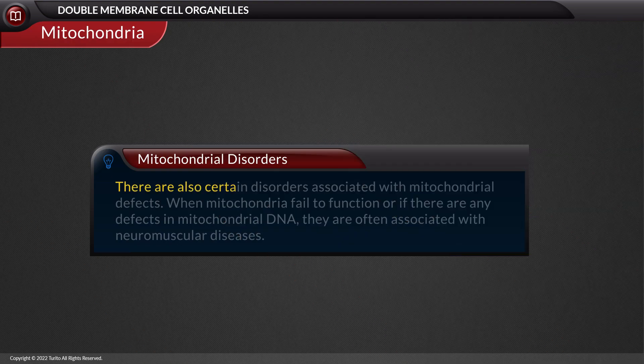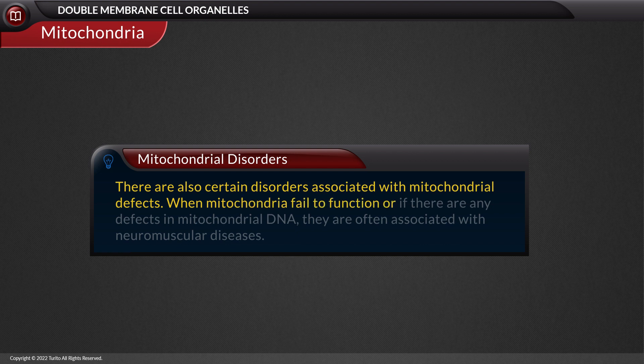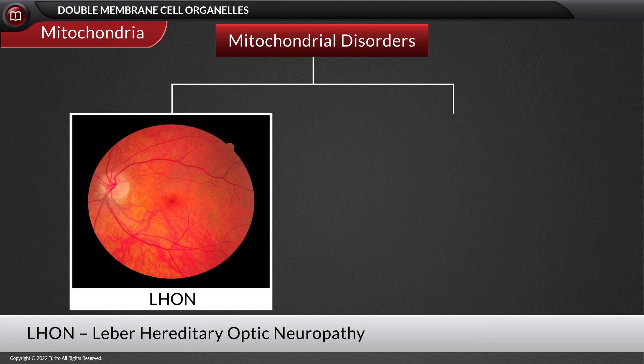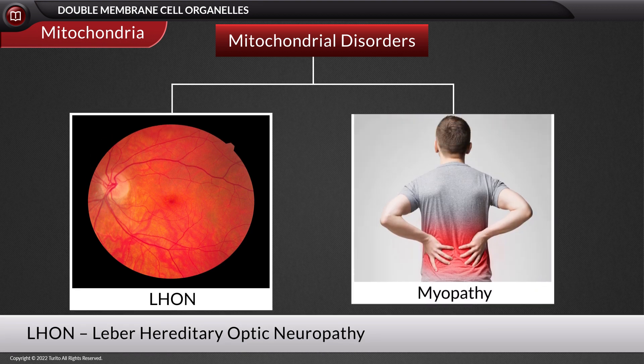There are also certain disorders associated with mitochondrial defects. When mitochondria fail to function or if there are any defects in mitochondrial DNA, they are often associated with neuromuscular diseases such as LHON, Leber hereditary optic neuropathy, myopathy, etc.